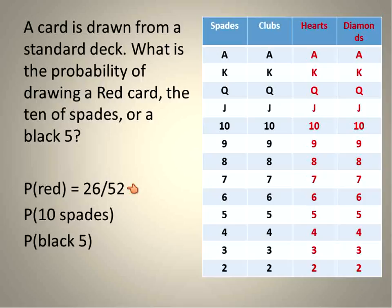Okay, so red is 26 out of 52. The ten of spades, that's one out of 52. And how many black fives are there? Two. That would be two out of 52. So there is the probability of these three events. A red, 26 out of 52. Ten of spades would be one out of 52. And a black five would be two out of 52.